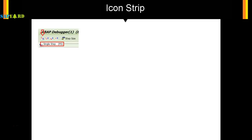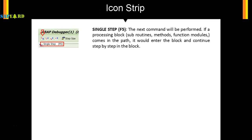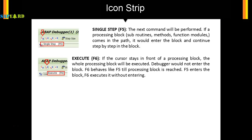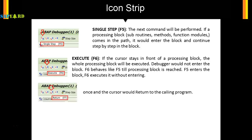For your benefit, here is a written summary of what was covered. F5 — Single Step: the next command is performed. If a processing block like subroutines, methods, or function modules comes in the path, the debugger enters the block and continues step by step. F6 — Execute: if the cursor is in front of a processing block, the whole block is executed without entering. F6 behaves like F5 until a processing block is reached; F5 enters the block, F6 executes it without entering.